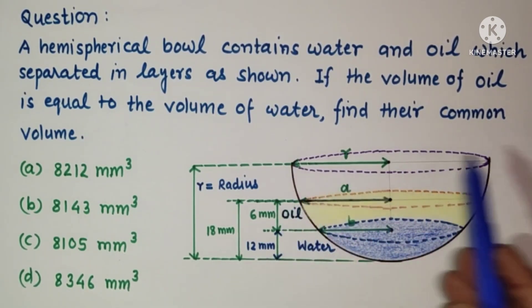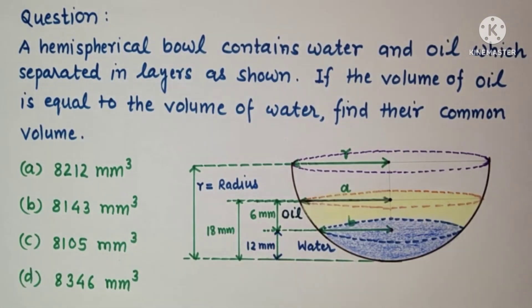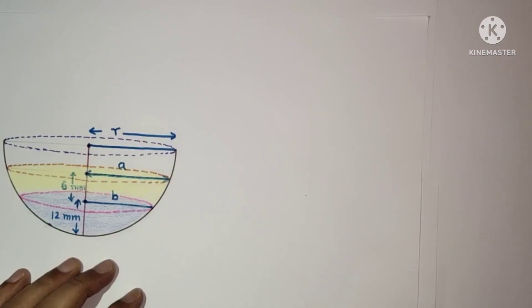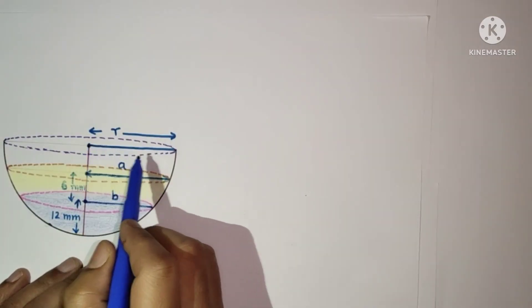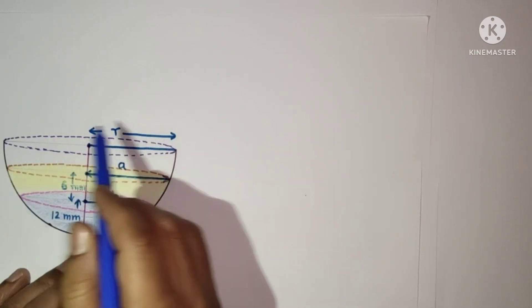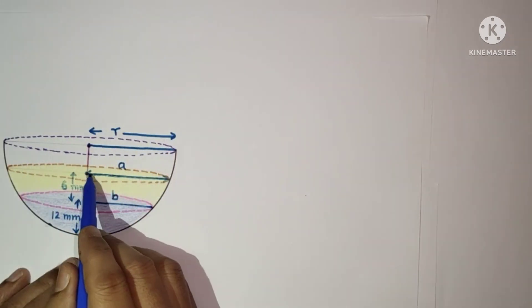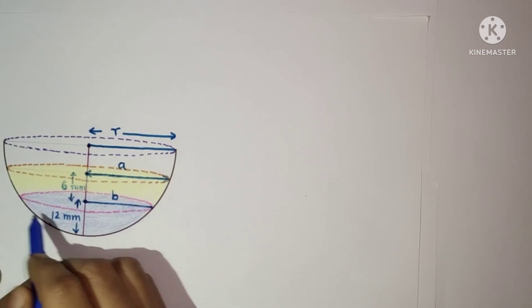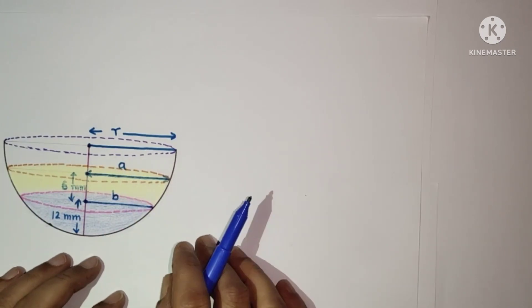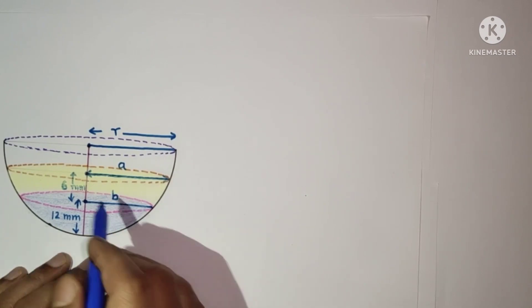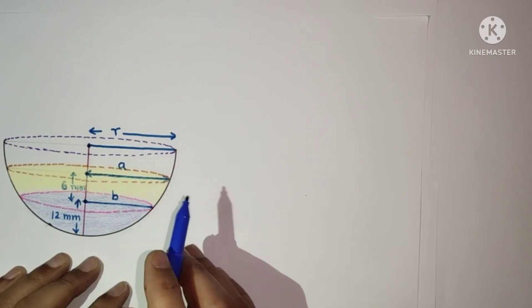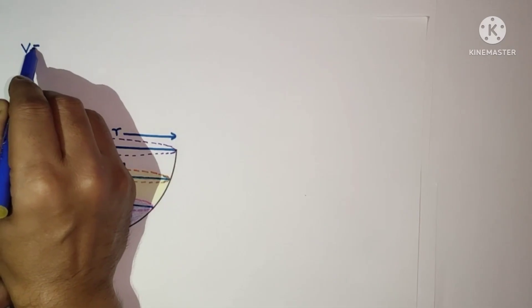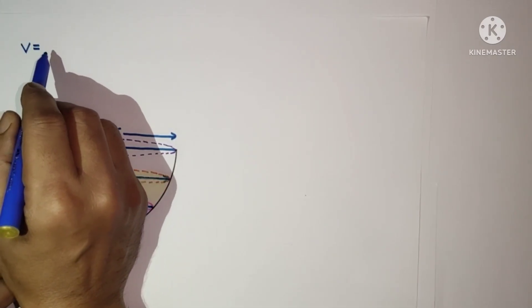We are given these four options. Let us solve the problem. This is R, the radius of the hemispherical bowl. This is A, and this is B, the radius of this circle. The formula for the volume of liquid kept inside a hemispherical bowl is: volume equals pi h squared by 3, times 3 times radius minus height.